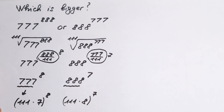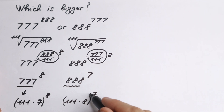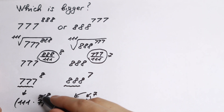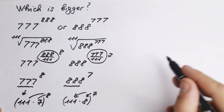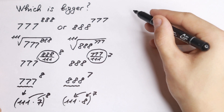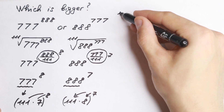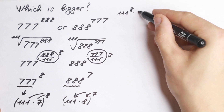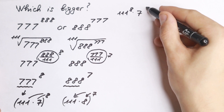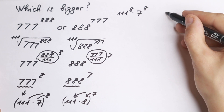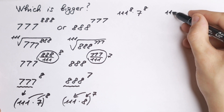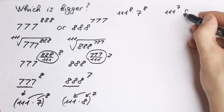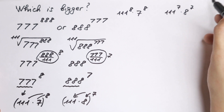Now we apply the power rule — we raise both factors inside each expression to the outer power. As a result, on the left we have 111 to the 8th times 7 to the 8th, and on the right we have 111 to the 7th times 8 to the 7th.